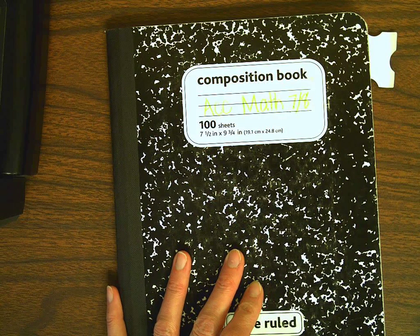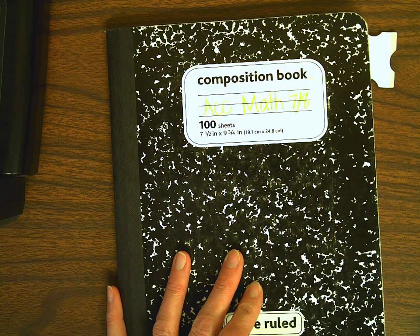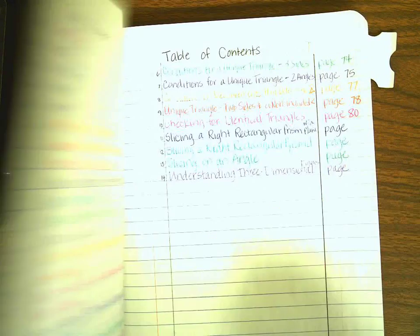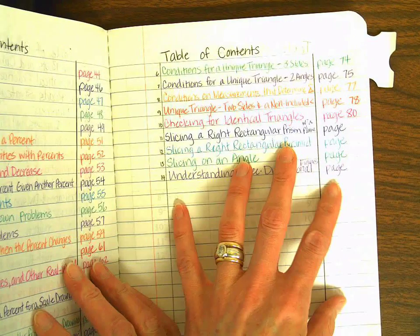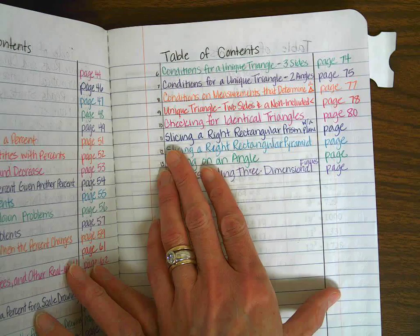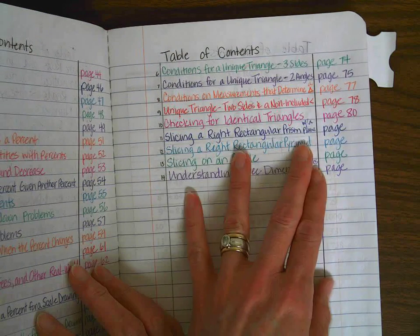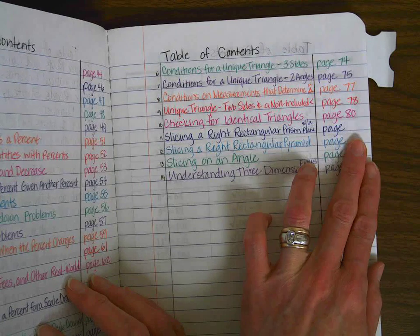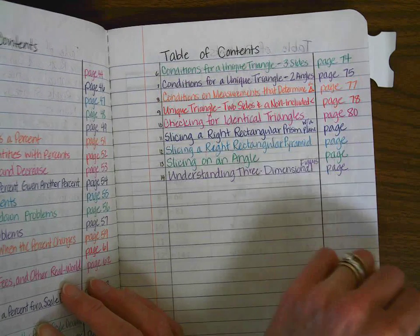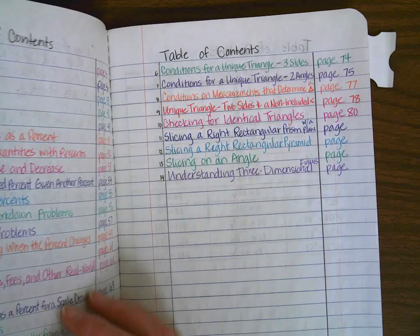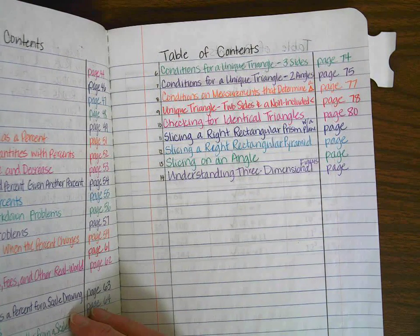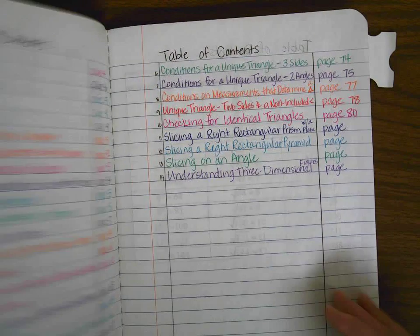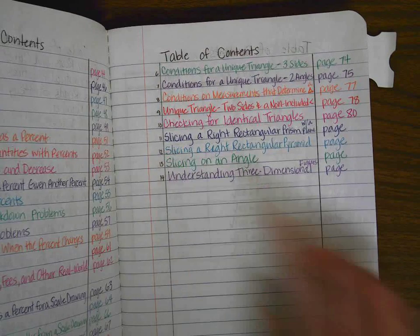Hello, Accelerated Math 7-8 students. We are working in Module 11, and we are going to start Lesson 11. Module 11, Lesson 11 is called Slicing a Right Rectangular Prism with a Plane.